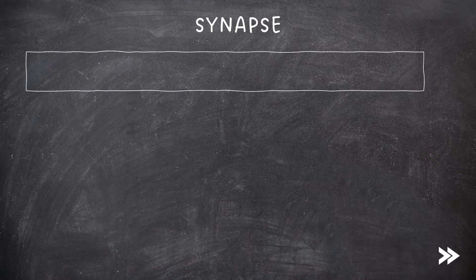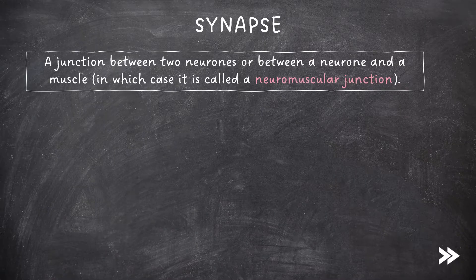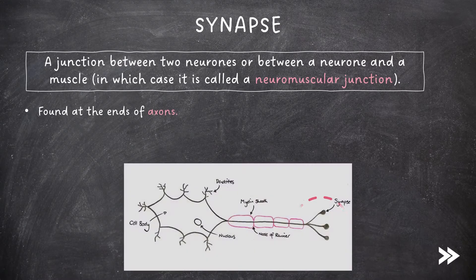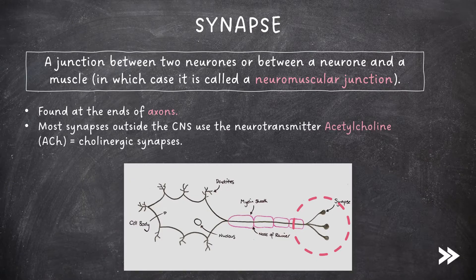So let's make a start. First of all, what is a synapse? Well, a synapse is a junction between two neurons, or between a neuron and a muscle, in which case it is called a neuromuscular junction. They are found at the ends of axons. Most synapses outside the central nervous system, the CNS, use the neurotransmitter acetylcholine, which can be shortened to ACh with a capital C, hence them being called cholinergic synapses.